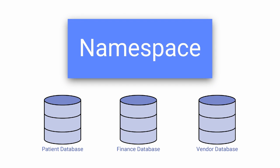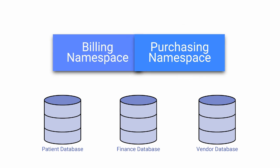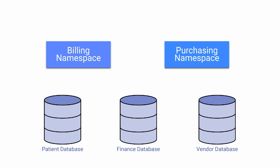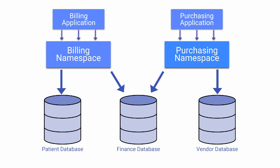Cache applications run in a namespace. A namespace contains references to data across any number of databases. Namespaces add a logical layer of abstraction to the system, decoupling applications and queries from the physical layout of the data. This allows them to remain agnostic to data being retrieved from multiple locations.